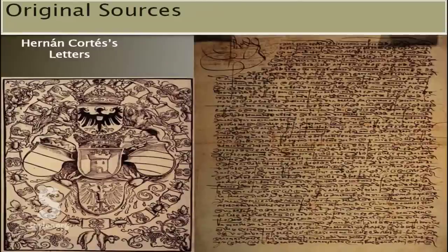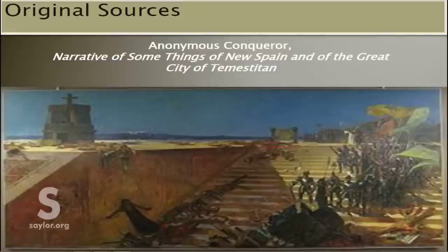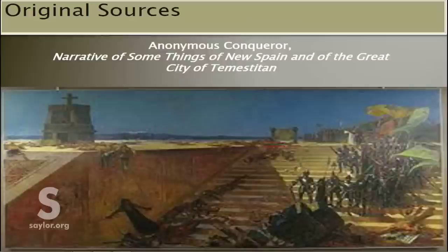There are several contemporary sources describing the Spanish conquest of the Aztec Empire. First, we have Hernán Cortes' personal letters — five letters addressed to King Charles V of Spain relating his campaigns, which have survived to our days. You can read one of these letters translated into English in subunit 2.1. Another source is the narrative titled 'Some Things of New Spain and of the Great City of Temestitian,' written by an anonymous conquistador, probably one of Cortes' companions. This account offers detailed descriptions of Aztec civilization before the Spanish arrival and the course of Cortes' campaign, and is considered by historians a very realistic account.